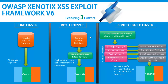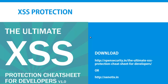That's all about the three Fusors of Xenotix. We have talked about different ways of detecting, exploiting, and gathering information with XSS. We should also talk about something that helps developers to fix XSS — we have released a cheat sheet called the Ultimate XSS Protection Cheat Sheet for developers. You can download it from the Open Security website or from the Xenotix website. We also now have a dedicated website for Xenotix, available at http://xenotix.me.